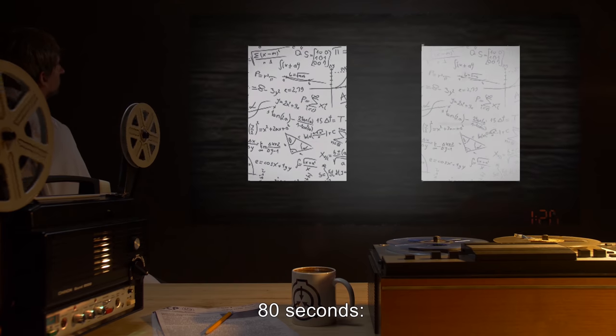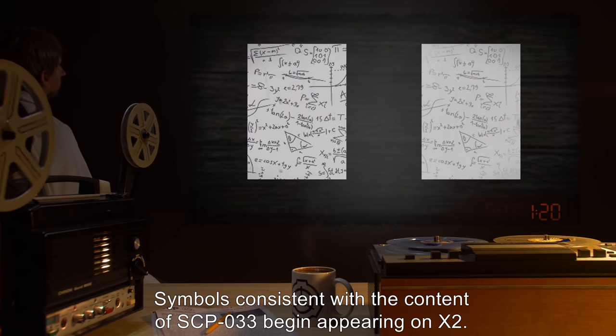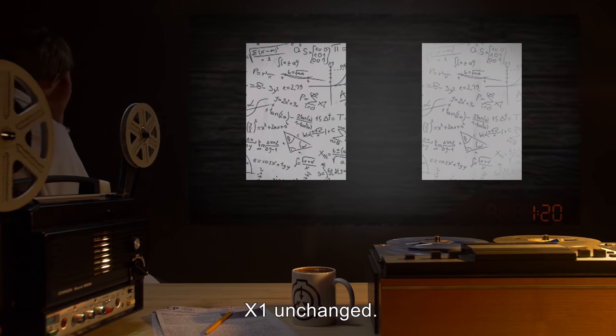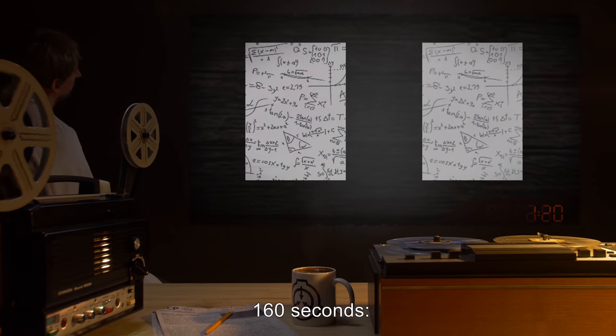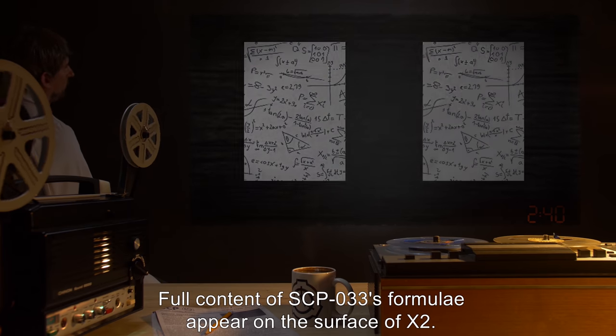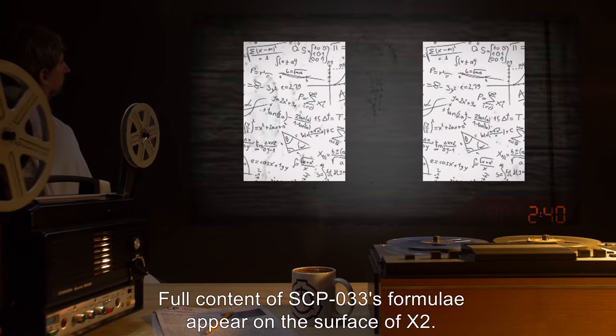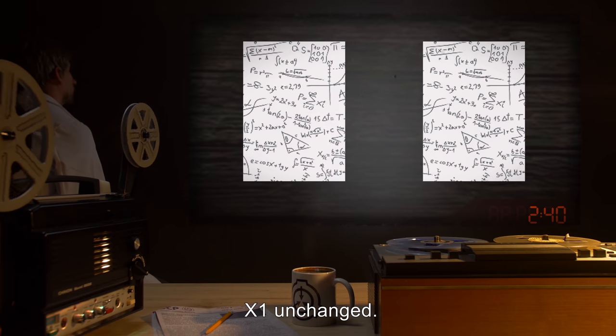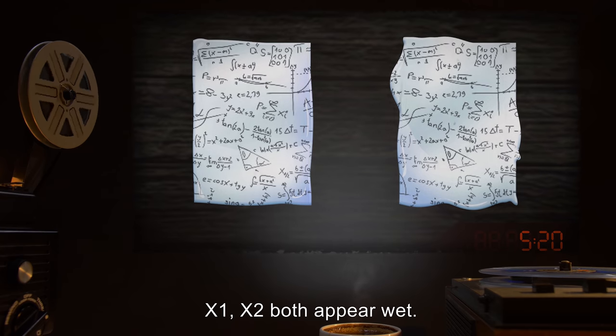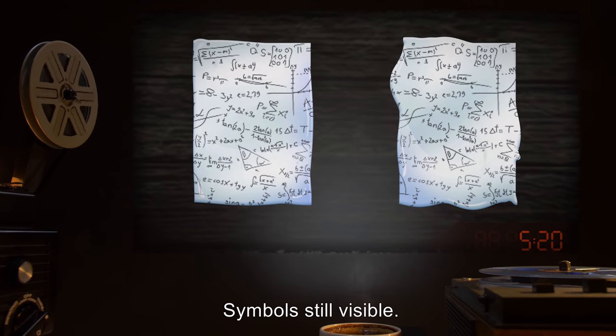Eighty seconds: Symbols consistent with the content of SCP-033 begin appearing on X-2. X-1 is unchanged. One hundred and sixty seconds: Full content of SCP-033's formula appear on the surface of X-2. X-1 unchanged. Three hundred and twenty seconds: X-1, X-2 both appear wet. Symbols still visible.